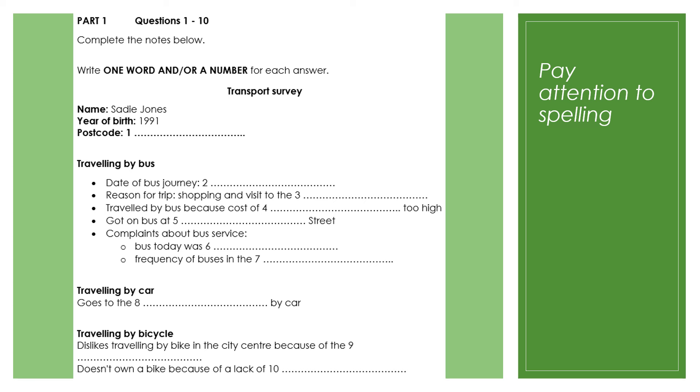IELTS 18, published by Cambridge University Press and Assessment 2023. This recording is copyright. Test one. This is the IELTS listening test. You will hear a number of different recordings and you will have to answer questions on what you hear. There will be time for you to read the instructions and questions, and you will have a chance to check your work. All the recordings will be played once only. The test is in four parts. At the end of the test, you will be given 10 minutes to transfer your answers to an answer sheet. Now turn to Part 1.